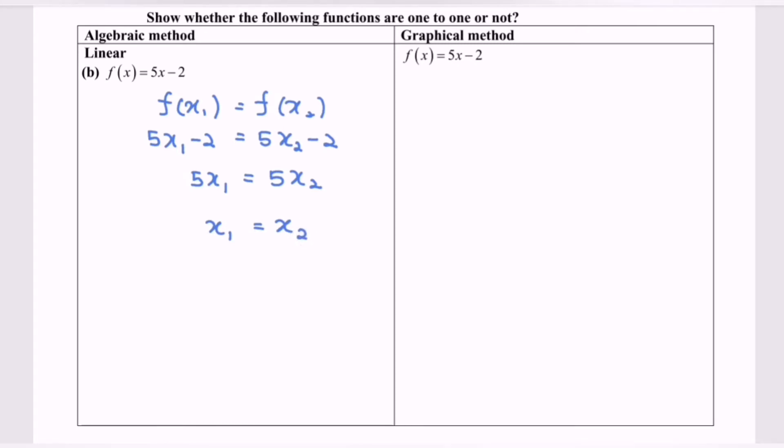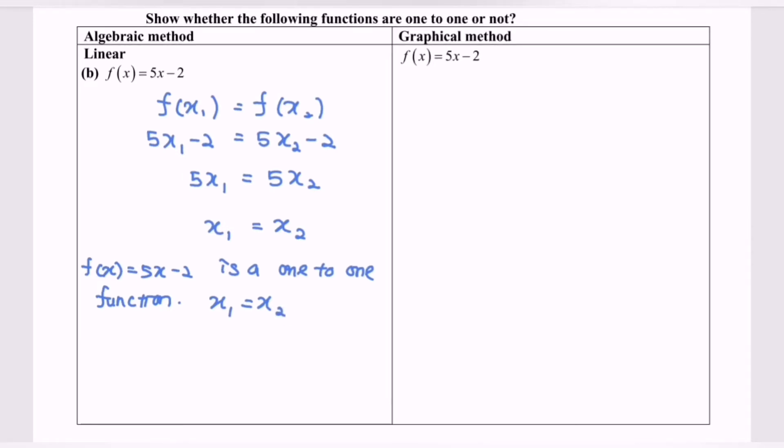So this shows that f(x) equals 5x minus 2 is a one-to-one function. Reason? Because x₁ equals x₂, and it also shows that f inverse exists.